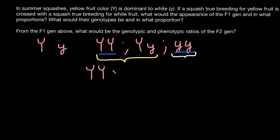When we cross two parents that are both homozygous dominant for yellow color, these two parents can only produce progeny with yellow fruits. If we cross another true breeding parent that is homozygous recessive, that cross would also produce progeny with only white colored fruits.